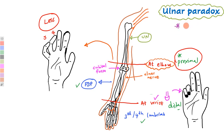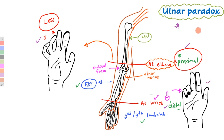Why is this called a paradox? Because when a nerve is damaged more proximally, we expect to see more deformity than when it is damaged distally. But with ulnar nerve damage, when the damage is more proximal there is less deformity, and when the damage is more distal there is more deformity. So ulnar nerve damage shows a paradox.